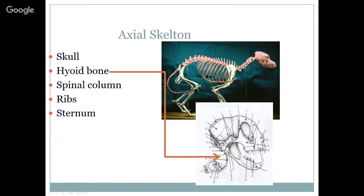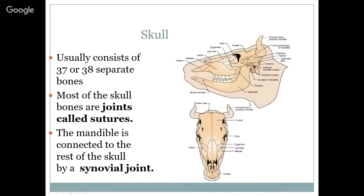The axial skeleton consists of the skull, the hyoid bone — which supports the larynx — the spinal column, and the ribs with the sternum. The skull usually consists of 37 or 38 separate bones. The skull bones are connected at joints called sutures, which are typically not flexible joints. The mandible is connected to the rest of the skull by a synovial joint, and if we break open that joint, we can remove the mandible.